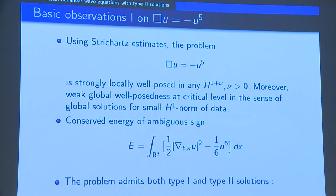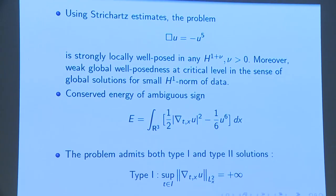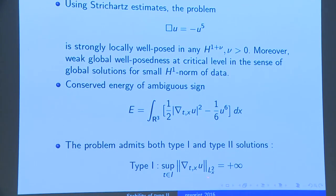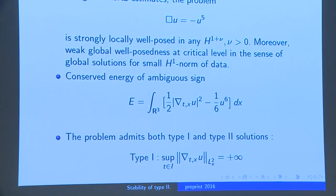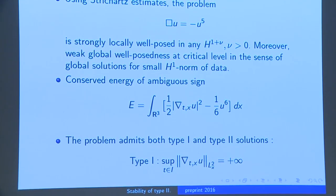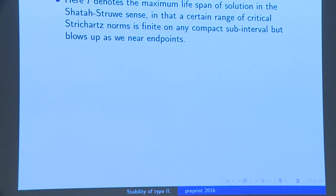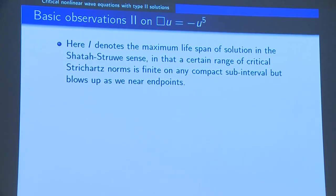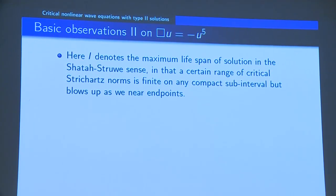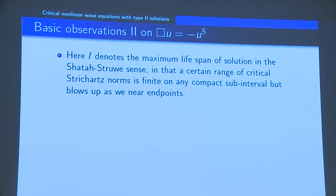To remind you: type 1 solutions are those for which the space-time gradient of u has infinite supremum of its L^2 norm on its interval of existence. The interval of existence is the maximum lifespan in the sense of Shatah-Struwe, in the sense that the L^5_t L^{10}_x norm is finite but gets infinite as you approach the extremities of this interval.